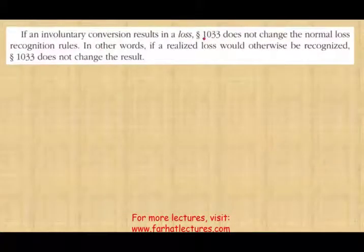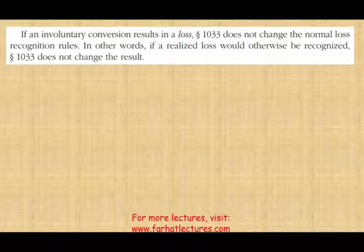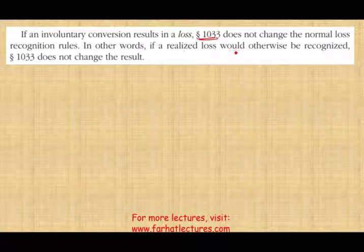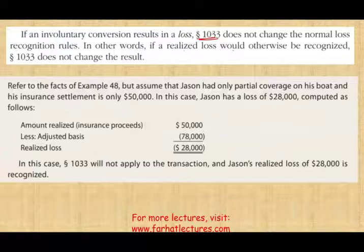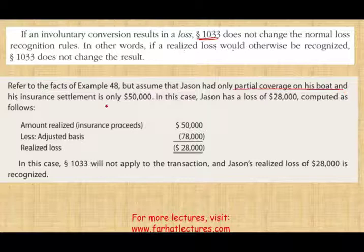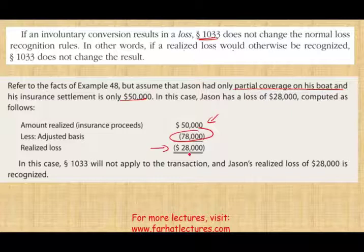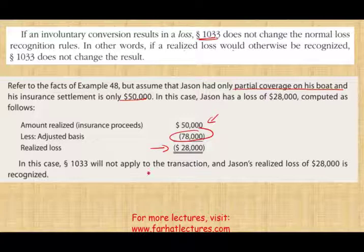If the involuntary conversion results in a loss, section 1033 does not change the normal loss recognition rules. If a realized loss would otherwise be recognized, you would recognize it — the section doesn't change that result. For example, if Jason had only partial coverage and his insurance company paid $50,000, the amount realized is $50,000 and the adjusted basis is $78,000, resulting in a realized loss of $28,000. Section 1033 does not apply to losses, so Jason's full $28,000 loss will be recognized.